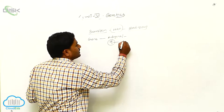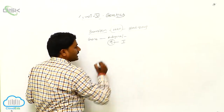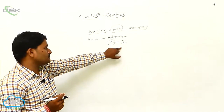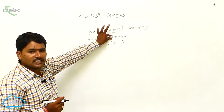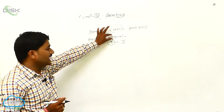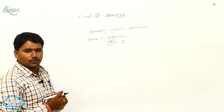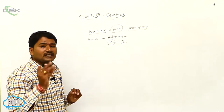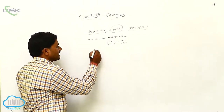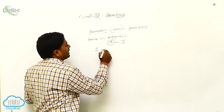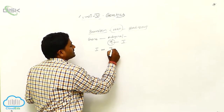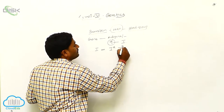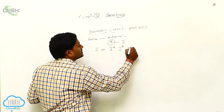The gene I is responsible for antigen synthesis and is located on the ninth chromosome. I has three alternative forms — that is why we call it multiple allelism. I has three alleles: Ia, Ib, and I0.